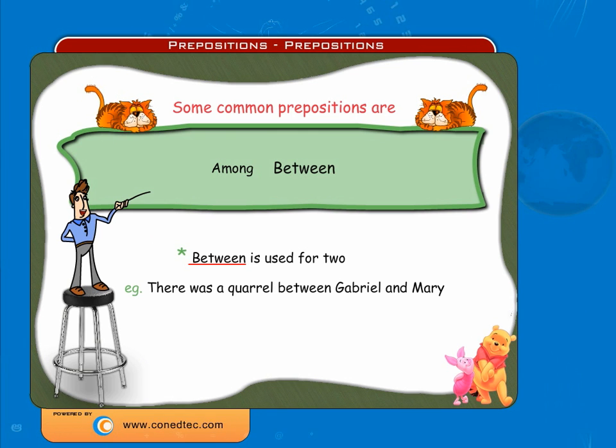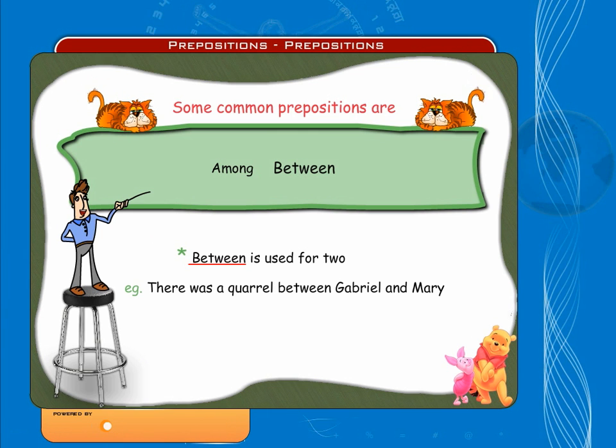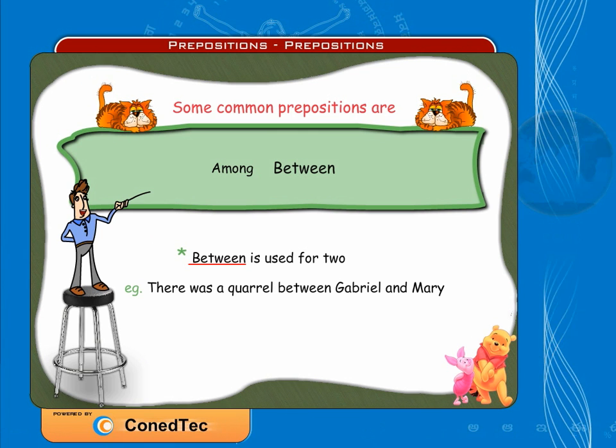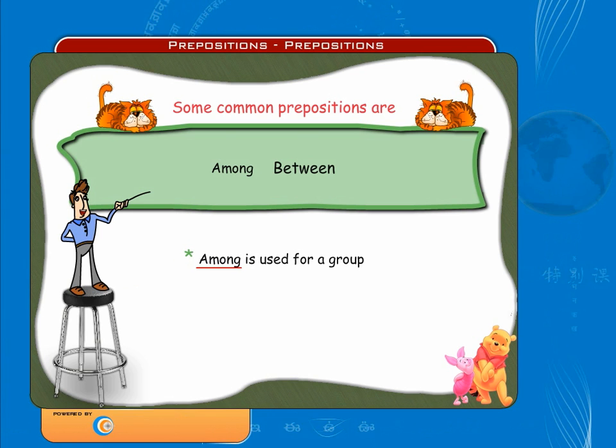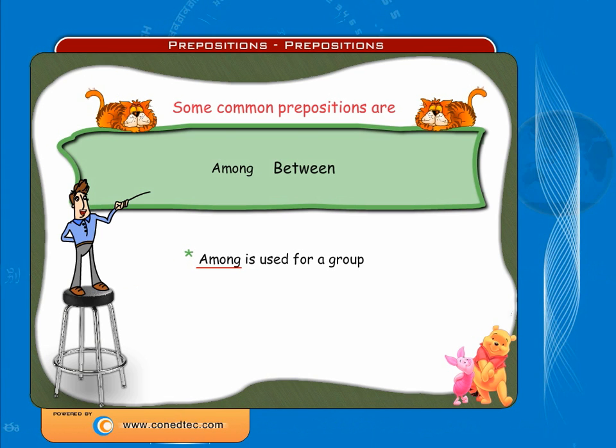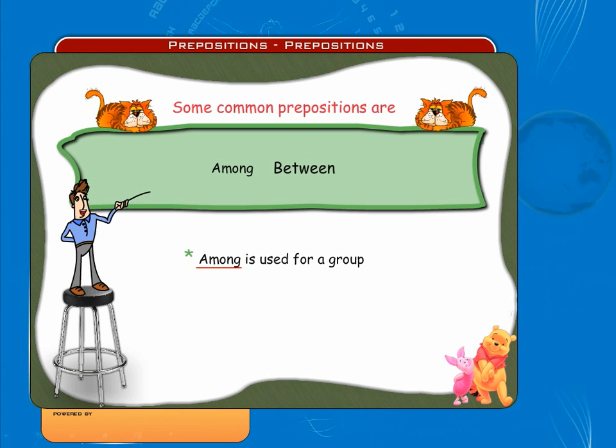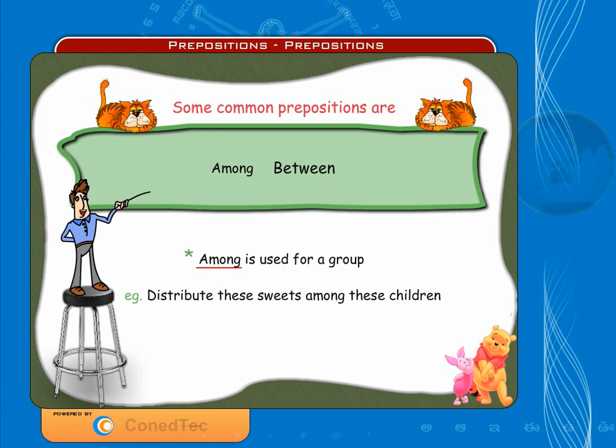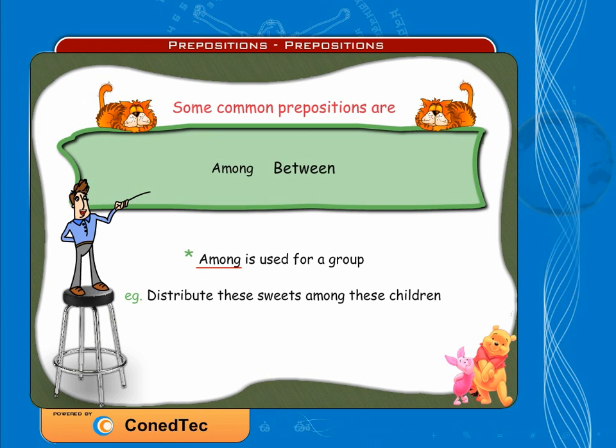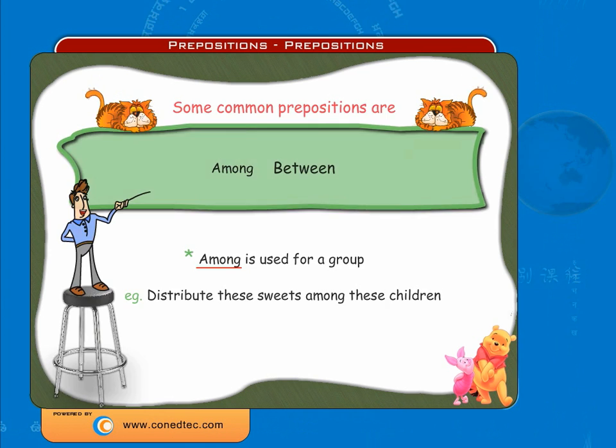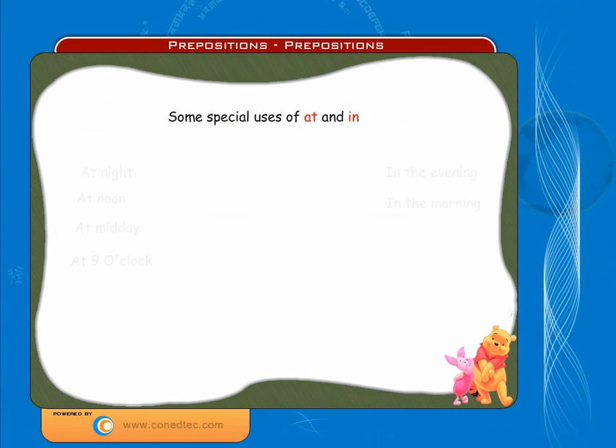We use 'between' for two. Example: There was a quarrel between Gabriel and Mary, where 'between' becomes the preposition. We use 'among' for a group. Example: Distribute these sweets among these children.